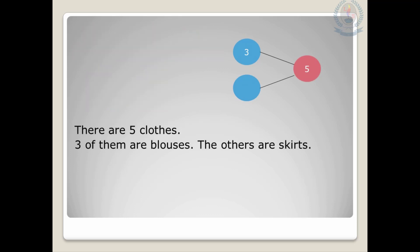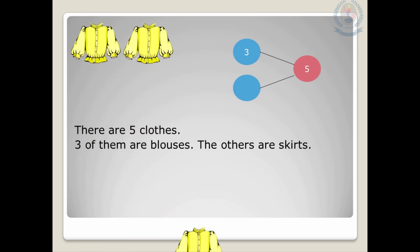Now look at this. There are five clothes. Three of them are blouses — yes, there are three blouses. The others are skirts. You have three blouses and the rest are skirts, but we don't know how many skirts there are. We have to find that. Look at this number bond — you have one part that is three and the whole is five. I am going to get the answer using this number bond.